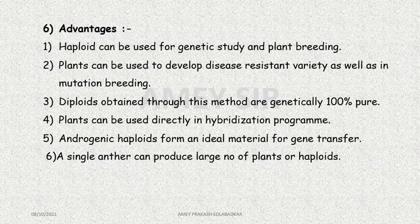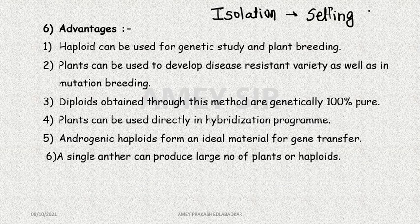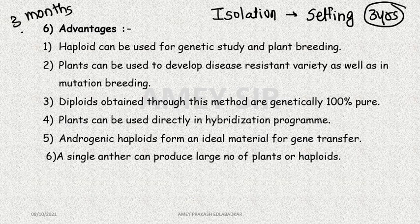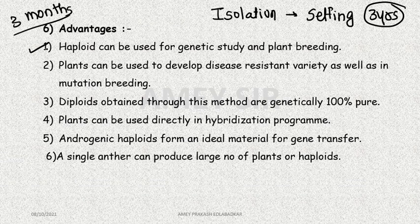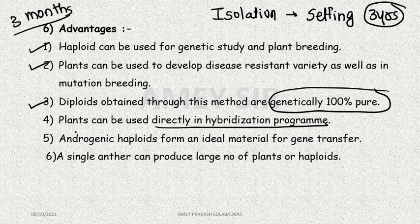Regarding advantages: haploids can be used for genetic study and plant breeding. We normally need to isolate parents and do selfing to achieve homozygosity — a process that takes three years. Tissue culture does this work for us in three months. Genetic study becomes possible, plant breeding is achieved, disease resistivity comes in, mutation breeding is possible, and the resulting diploids are genetically 100% pure. They can be directly used in hybridization programs — that is the biggest advantage.